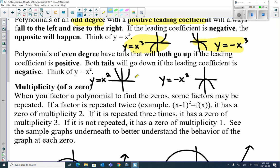Now, even degrees, tails either both go up if it's positive, or the tails go down if the leading coefficient is negative. Think of x squared. We know that y equals x squared looks like that, and if it's negative, it flips around and looks like that. And that applies to x to the 4 or x to the 6.